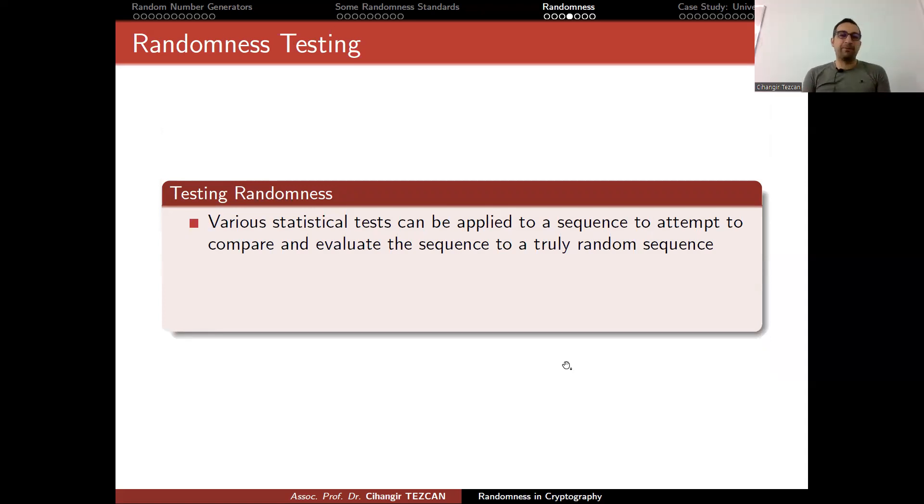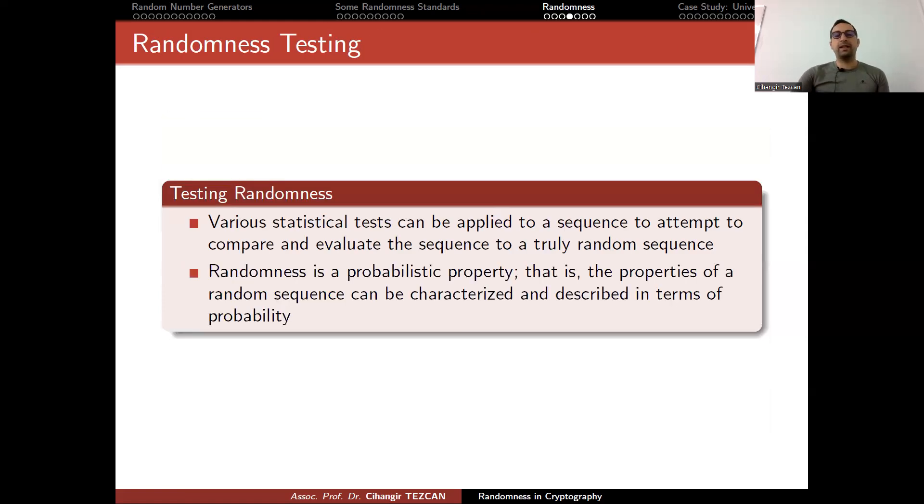Let's talk about testing randomness. Various statistical tests can be applied to a sequence to attempt to compare and evaluate the sequence to a truly random sequence. Randomness is a probabilistic property, that is, the properties of a random sequence can be characterized and described in terms of probability.